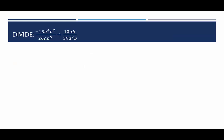Let's look at some examples. Our first example — the first step is to rewrite it as multiplication. So the first fraction stays the same: negative 15a to the fourth b squared over 26ab to the fifth. Then we change to multiplication and multiply by the reciprocal: 39a squared b over 10ab. From here, I'm not going to multiply the integer factors together yet. I'll combine the variable terms: I'll rewrite this as negative 15 times 39 in the numerator.